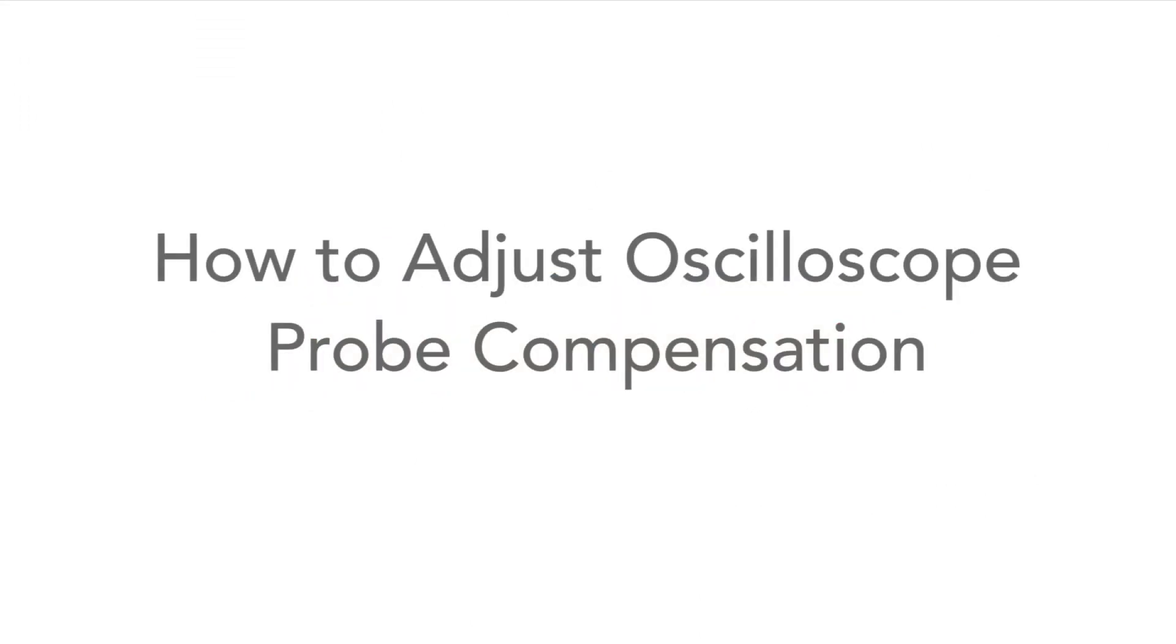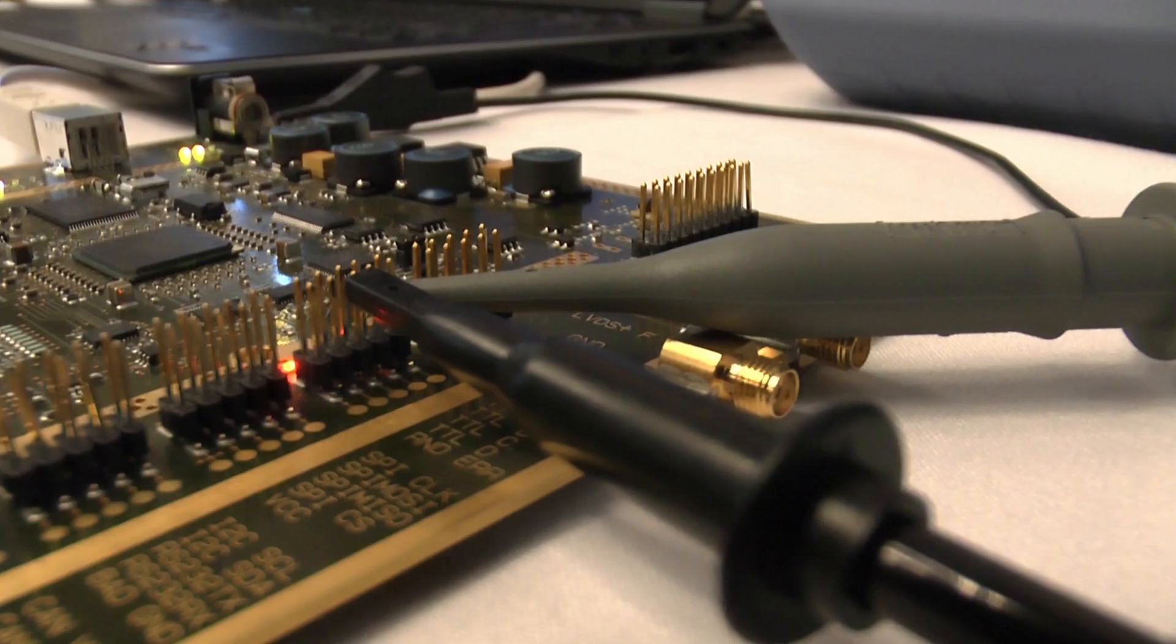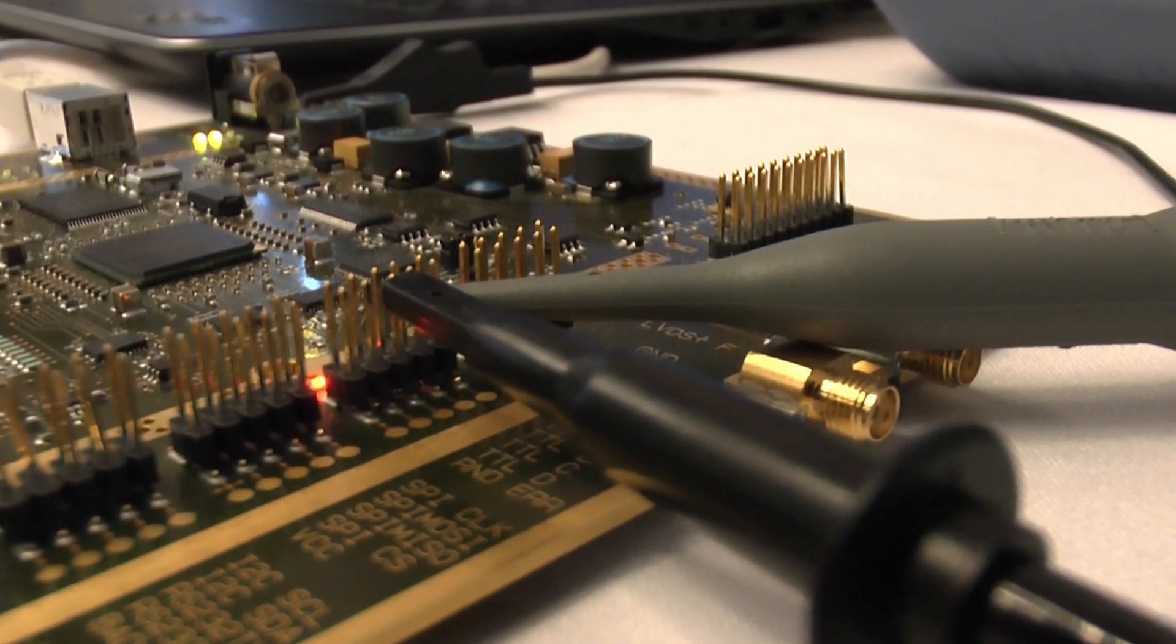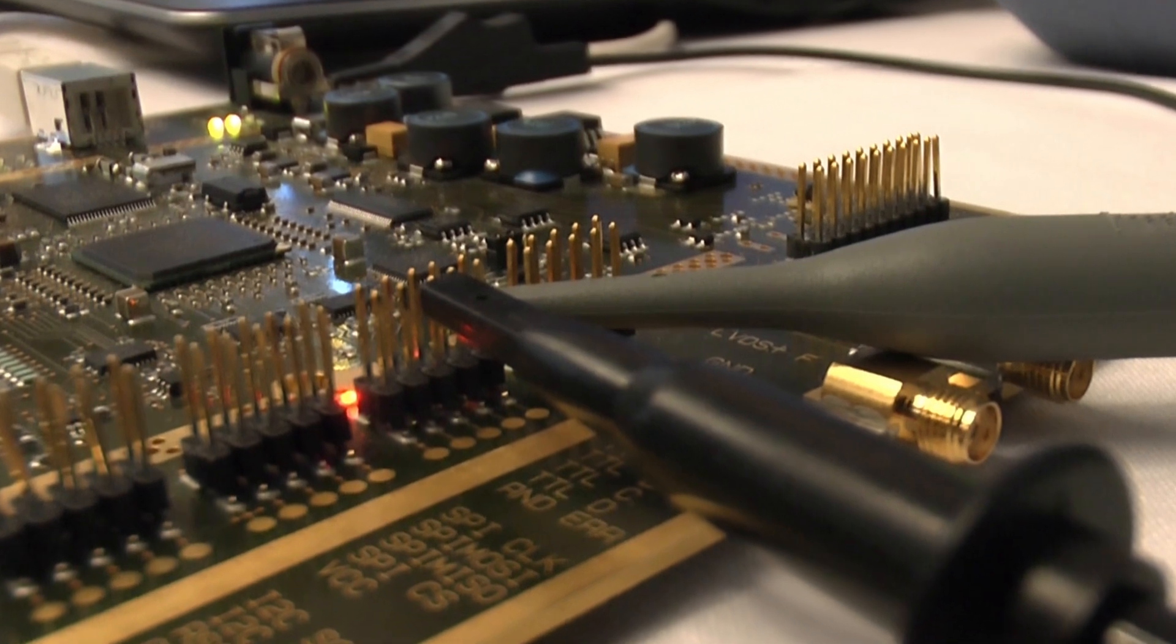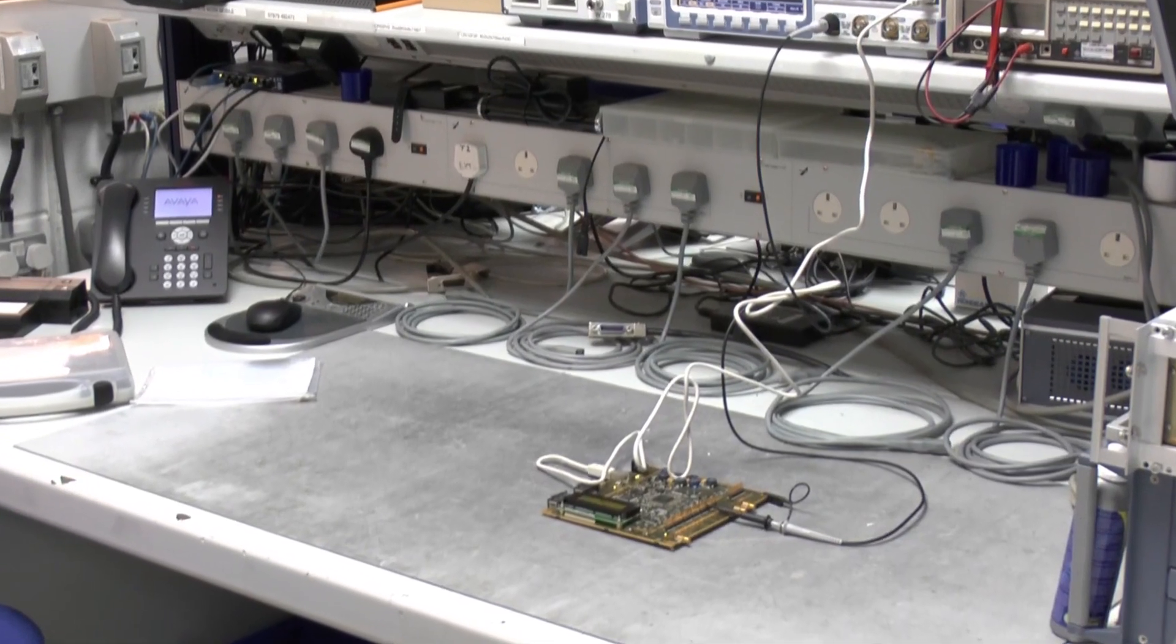Oscilloscope probes of one form or another are essential when using an oscilloscope, but to get the best results you need to know how to set them up properly. If not, they could lead to the scope giving inaccurate readings.